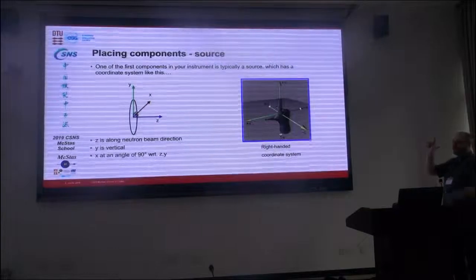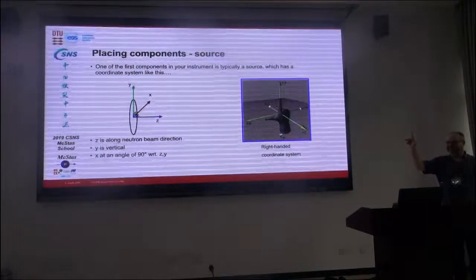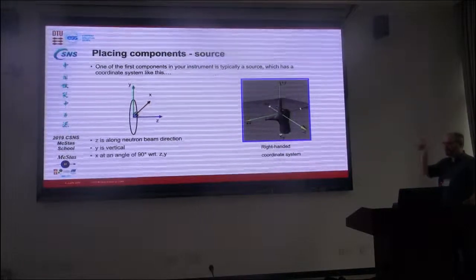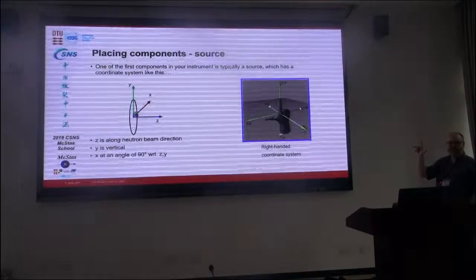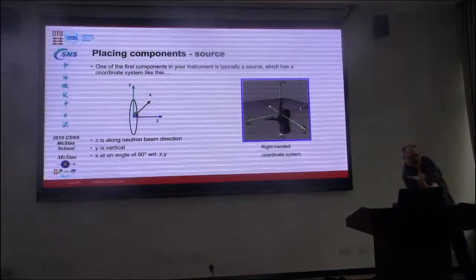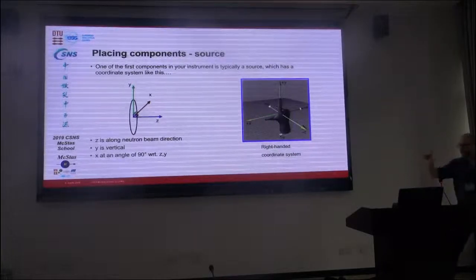It's a right-handed coordinate system — put the left one in the pocket. Z is the third finger, pointing forward. Y is vertical, and X is transverse horizontal. That's also where you might remember the difference from VTS, which has X, Y, Z arranged differently. So that's a rotation between the two coordinate systems.